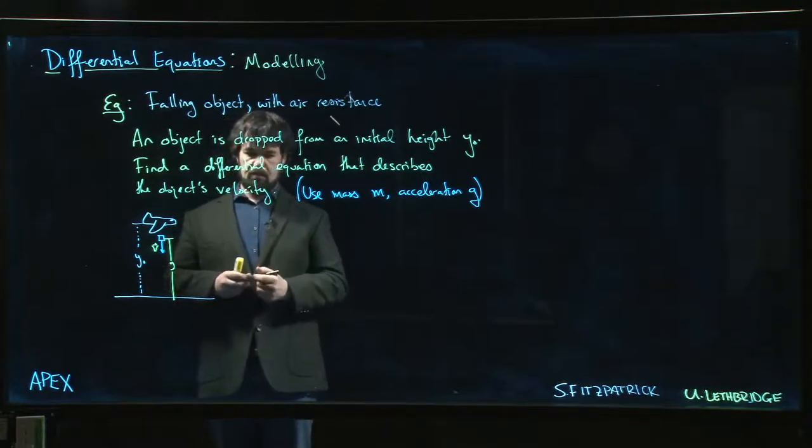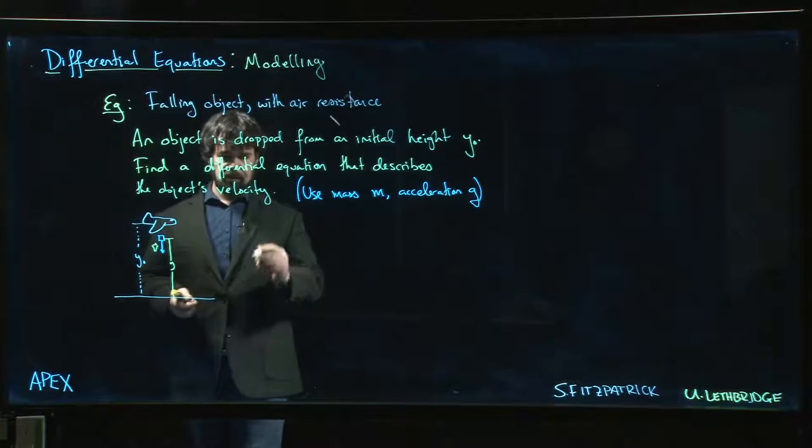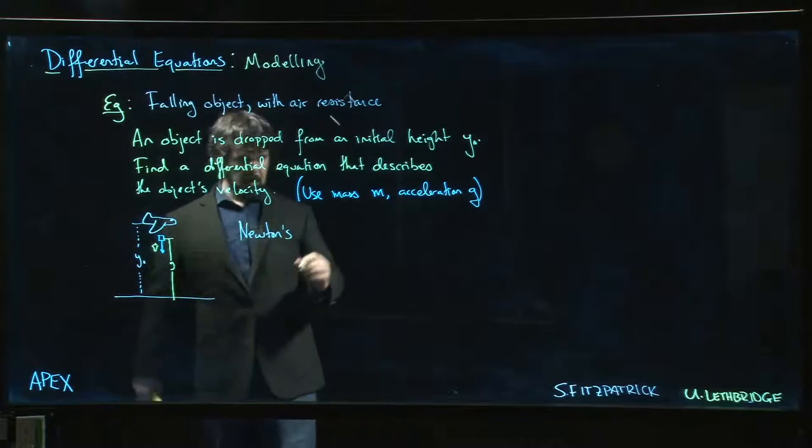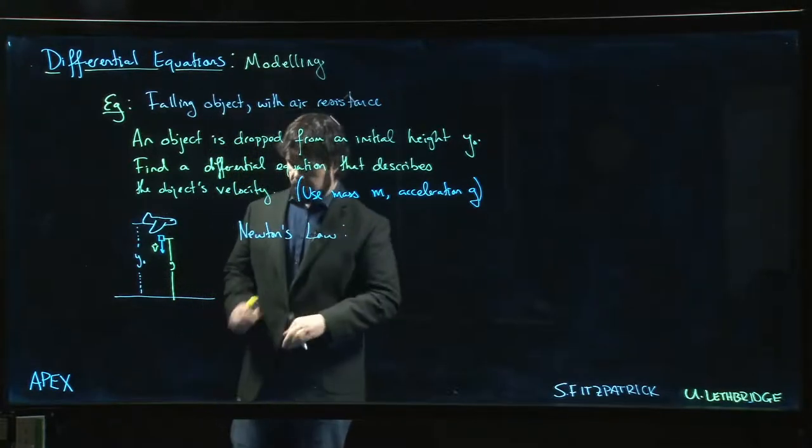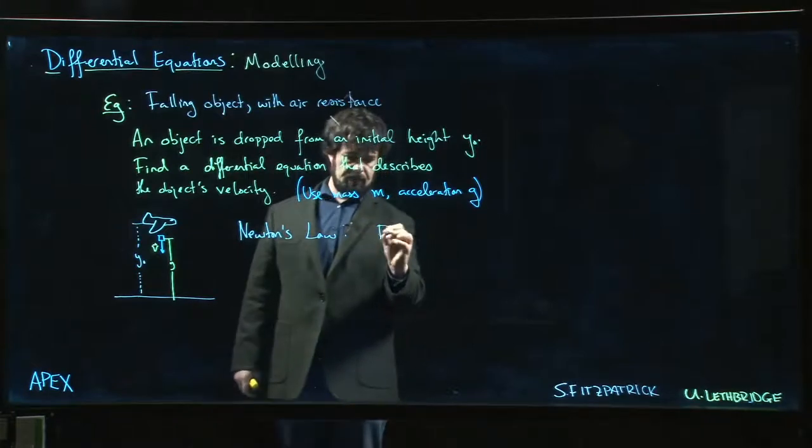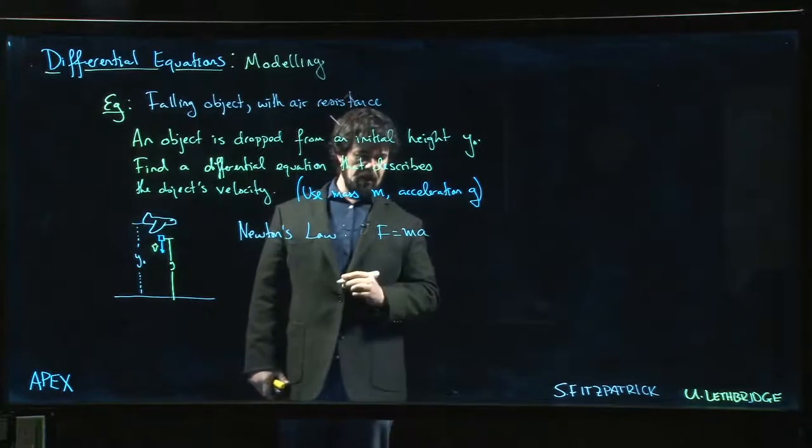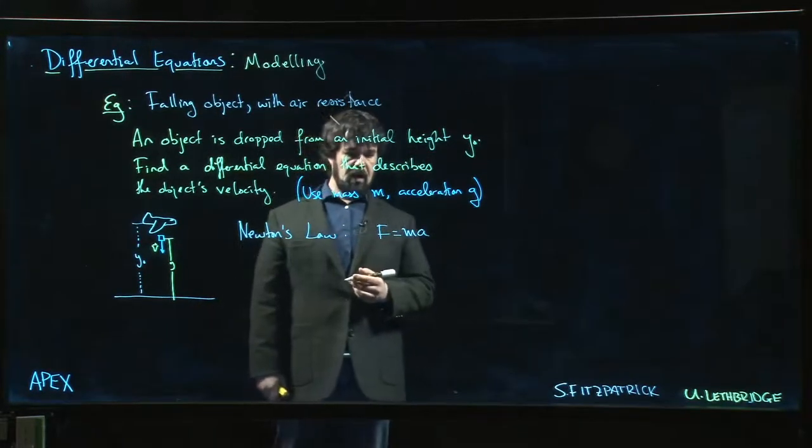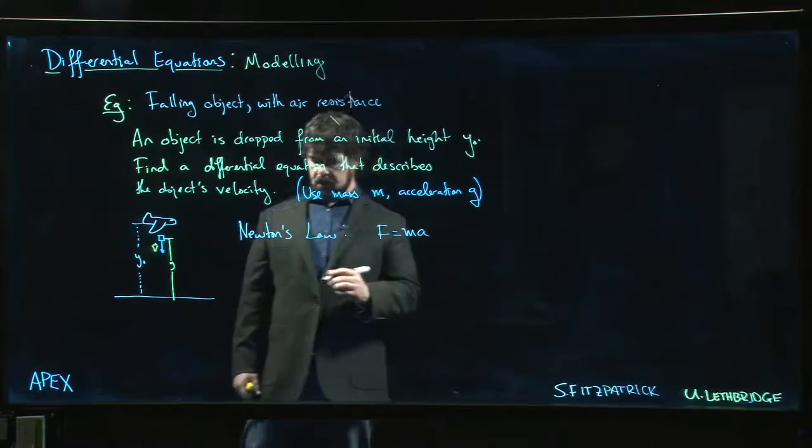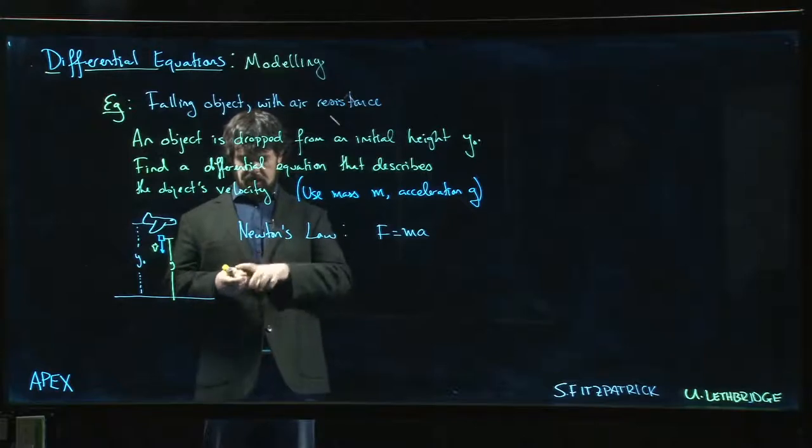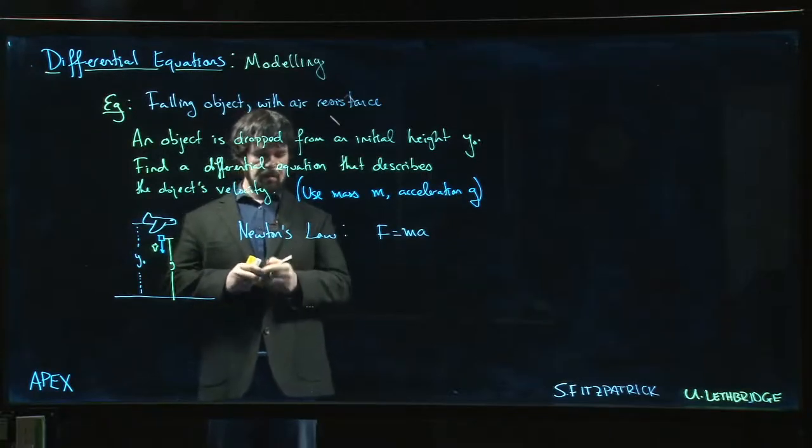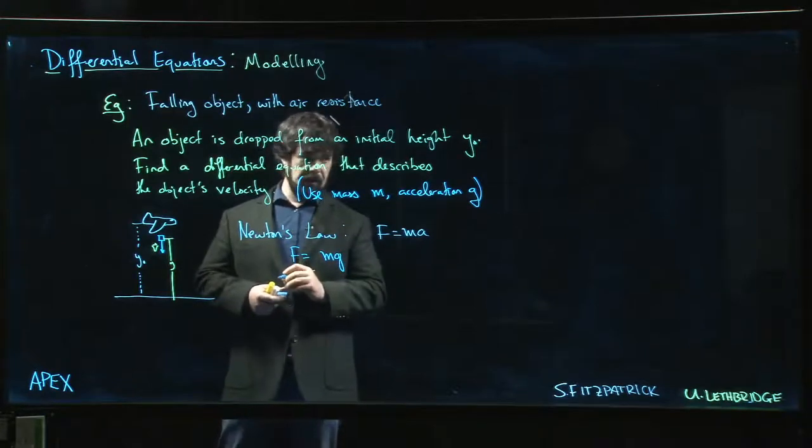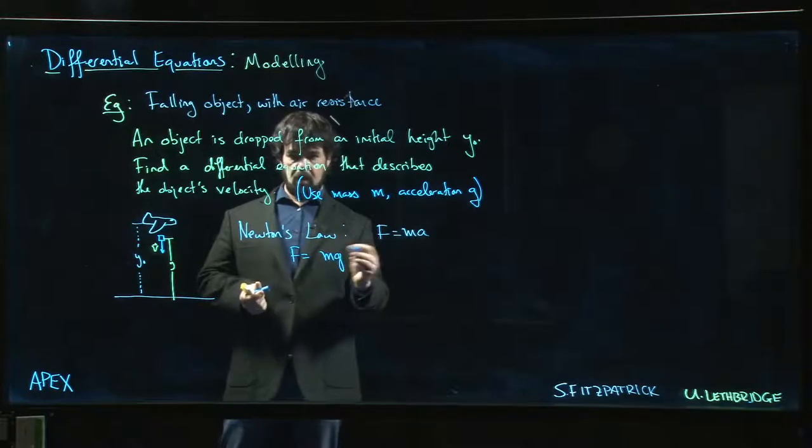How do we do this? The first thing we need to solve a problem like this is Newton's laws. Newton's law is F = ma, so force is mass times acceleration. In the case of acceleration due to gravity, the force exerted by gravity is mass times the acceleration due to gravity, we'll call that g.